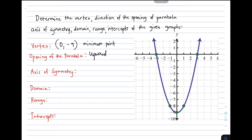Let's move on with the axis of symmetry. The axis of symmetry is the broken line or the line that divides the parabola into two equal parts. In this graph, the axis of symmetry is the y-axis. The format for the axis of symmetry is x is equal to h. Since the vertex has h equal to 0, the equation of the axis of symmetry is x is equal to 0.